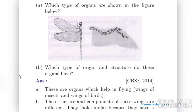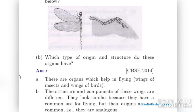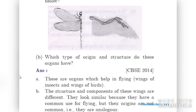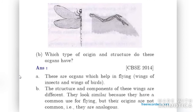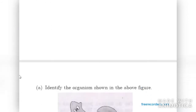Which type of organs are shown in the figure? The figure shows wings of an insect and wings of a bird — organs used for flying. The structure and components of these wings are different, and they do not share the same origin, but their function is the same. Therefore, these are analogous organs.